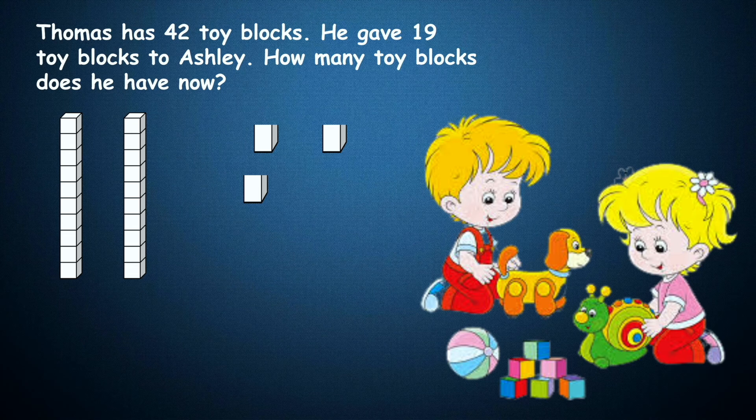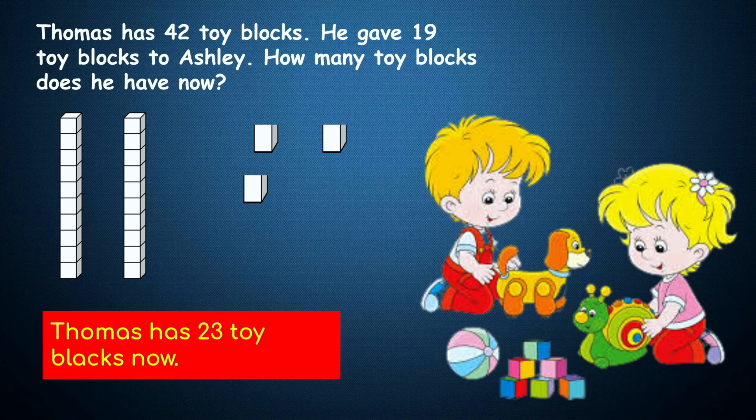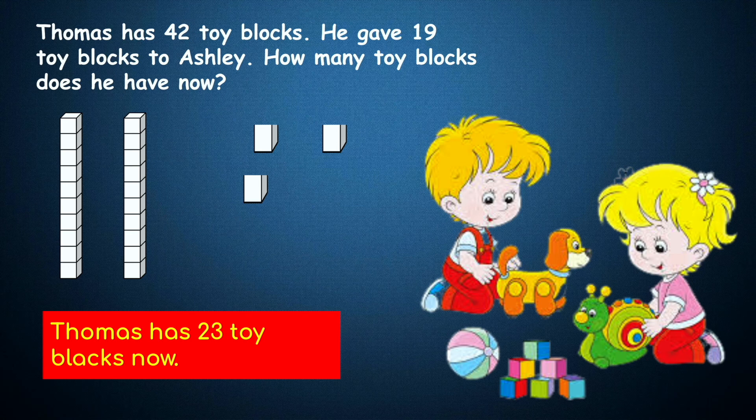We have one, two. We have two tens and three ones which makes it 23. So that shows Thomas has 23 toy blocks now.